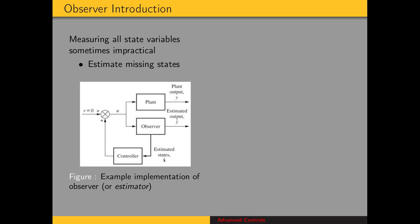Here's a concept of how this might work. We have the plant to which we're supplying an input that comes from our controller. The plant has an output. And then we have a separate observer, which is a model of the plant. We give that model the same input as the plant, and then we're estimating an output and estimating the state values based on the model. Then our controller comes up with its output based on these estimated state values.